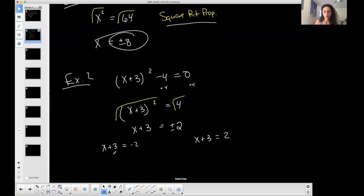Now I solve these two little equations. Subtract three from both sides. I get x is either negative five, or subtract three, x is equal to negative one. And these are my two solutions.